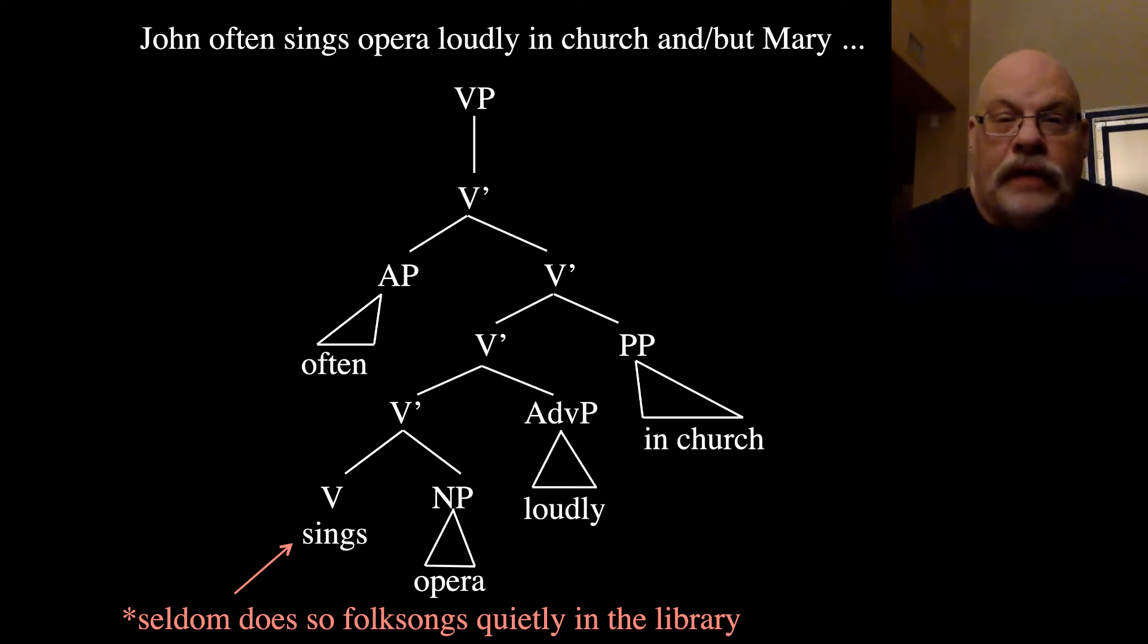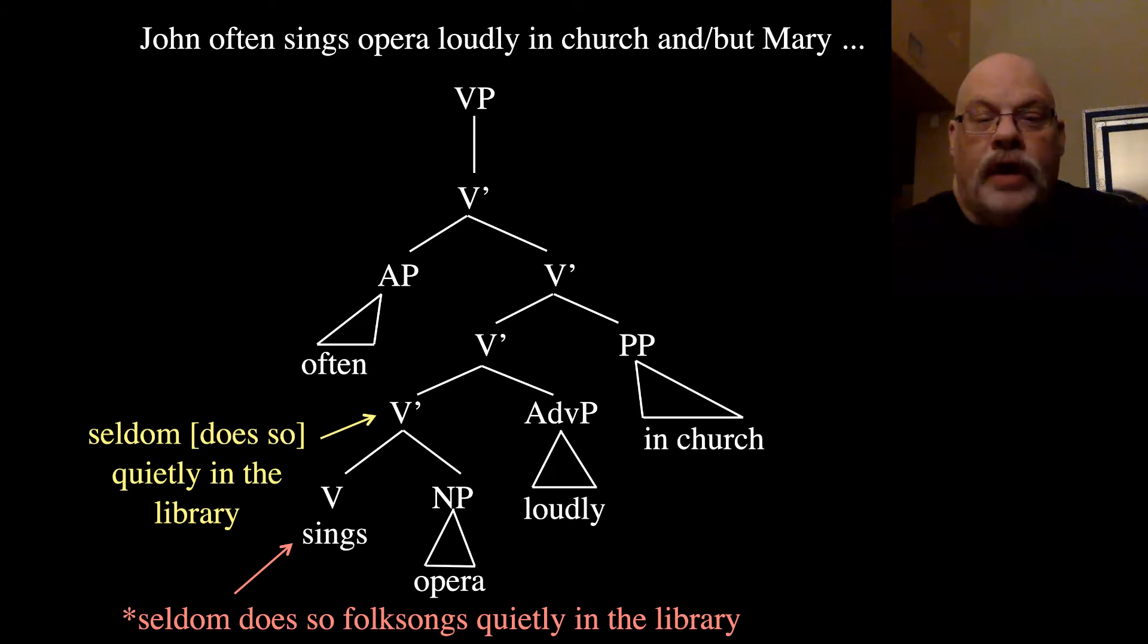John often sings opera loudly in church, but Mary seldom does so folk songs quietly in the library. That should be terrible for you. So you can't do V bar categories as you move up the tree. So John often sings opera loudly in church, but Mary seldom does so quietly in the library. That's targeting that first V bar above the head.